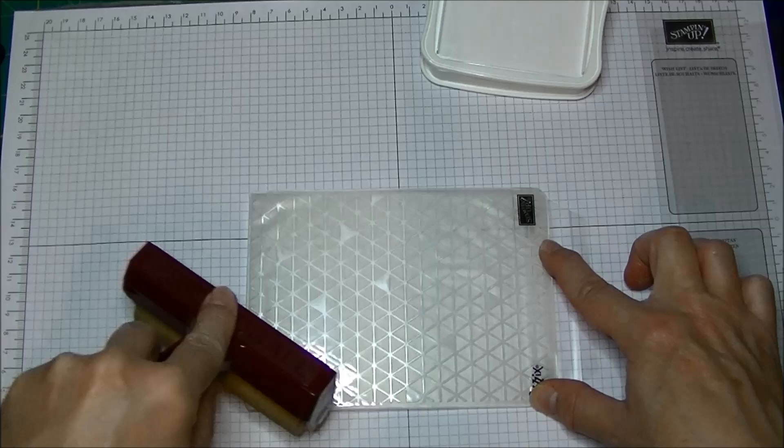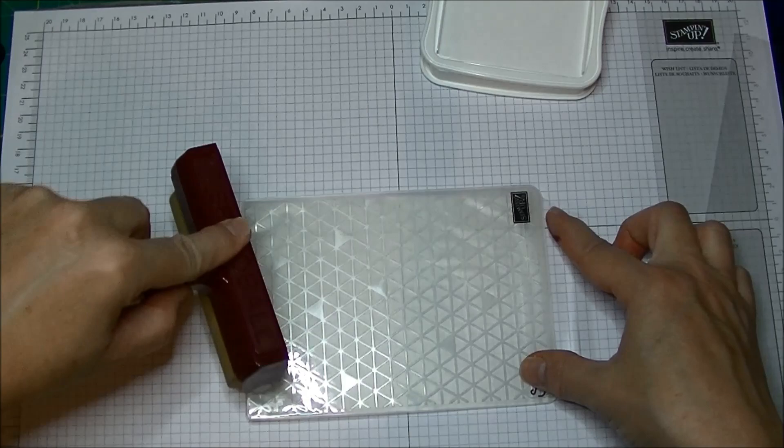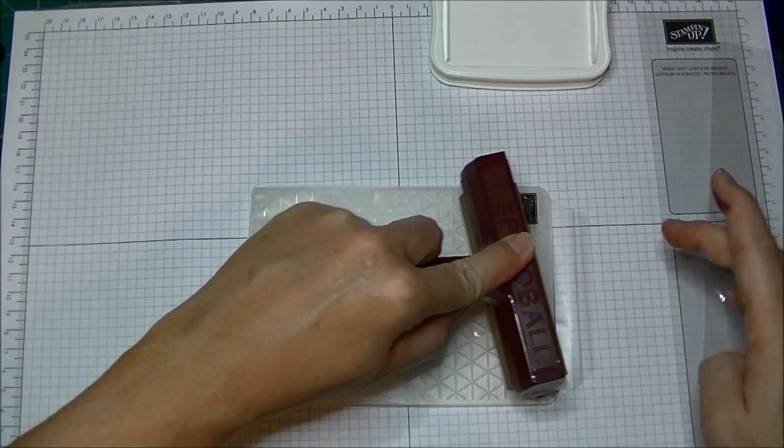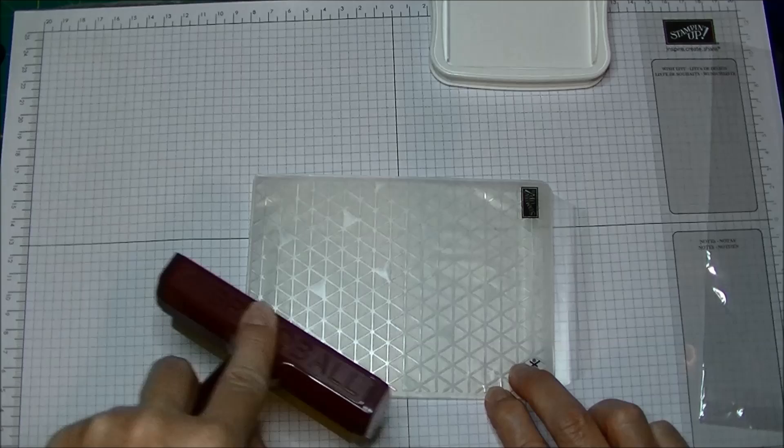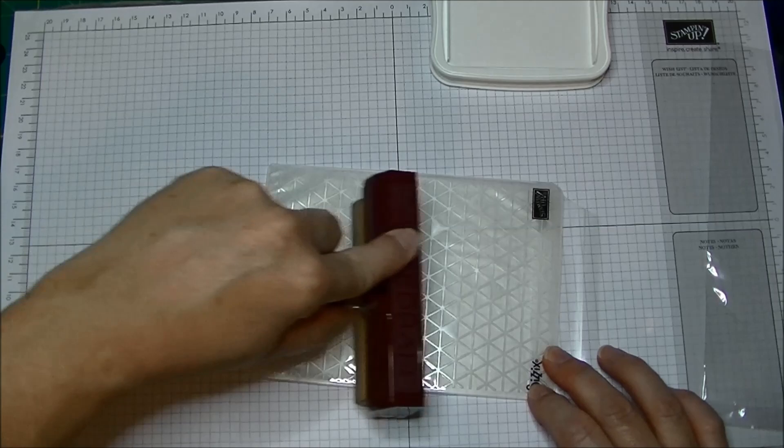Now since this is a solvent-based ink it takes a while to dry. The dye-based inks won't work. They won't ever dry on this so you need something that is actually a permanent ink. You could use your Stazon, your black Stazon also. Just remember that that's probably going to stain your embossing folder.